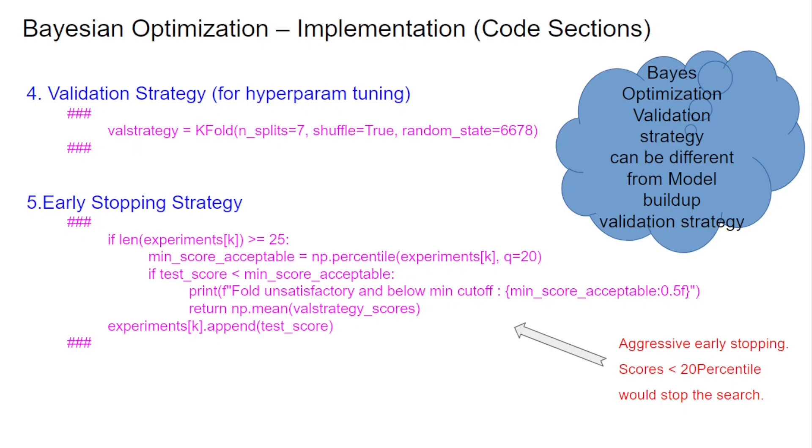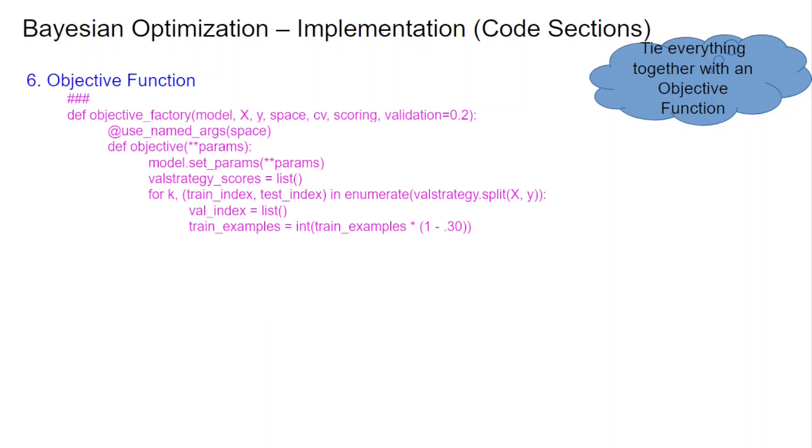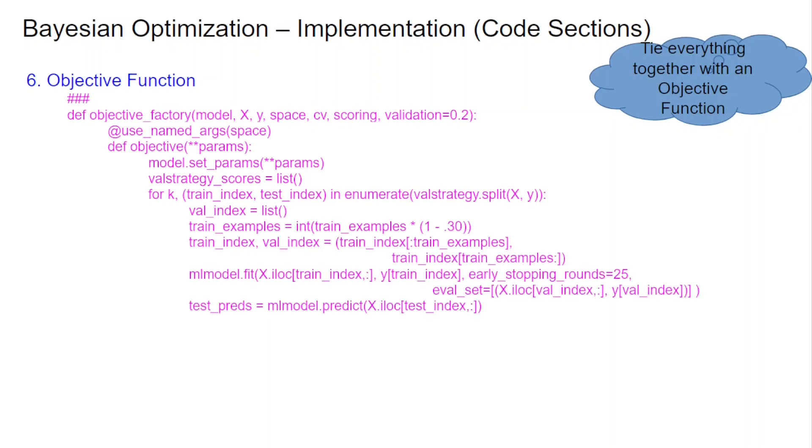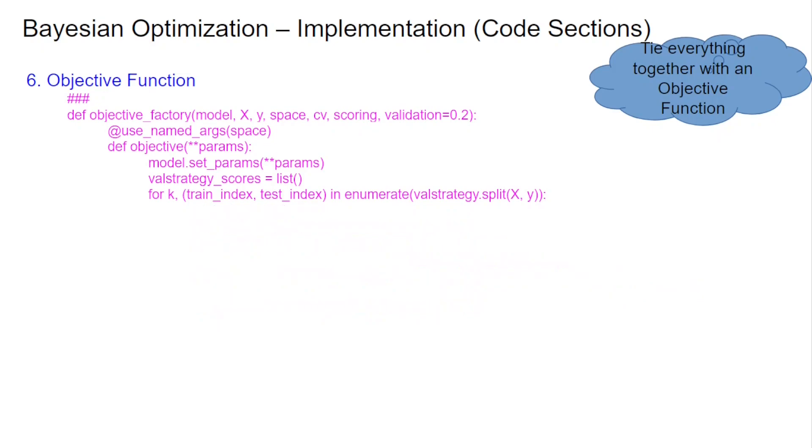Then we have an aggressive early stopping. So here I've said less than 20 percentile means I'm going to stop the search. Finally, you tie everything together with an objective function. So your objective function is going to drive many things. So objective function is def objective function objective factory model x, y, space, cv, scoring, validation equal to 2. So I have written this objective function. Let's go through this. Let's go through what we are doing. So we are fundamentally having a list for all the validation strategy scores. After that, we are going in taking the x and y's.